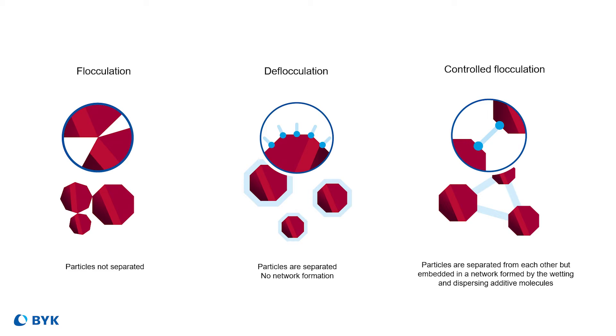In a sense, the controlled flocculating products build a network of pigment particles. Each wetting and dispersing molecule has multiple pigment affinity groups and binds to multiple particles, with no direct pigment-to-pigment contact. With each wetting and dispersing molecule binding to multiple pigment particles, you develop a 3D network similar to what you would observe with a rheology additive. The materials do not allow for as much pigment mobility and therefore help to avoid the flooding and floating that can occur when deflocculating additives are used.